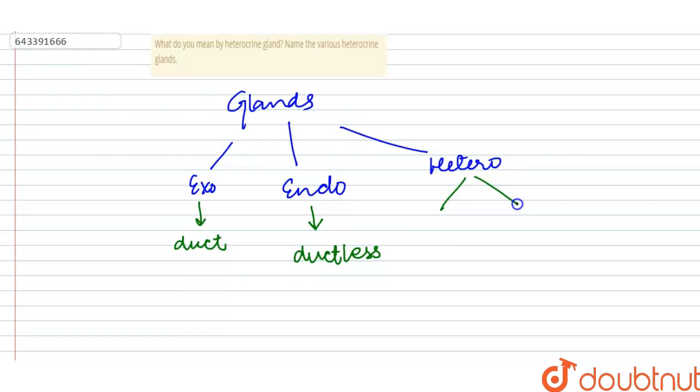The third kind of gland is the heterocrine gland. Heterocrine glands are those glands which serve the purpose of both the endocrine and the exocrine glands. There are basically three heterocrine glands present in the human body.